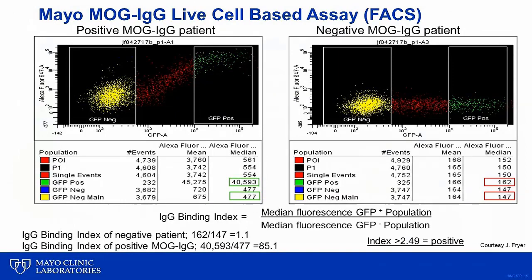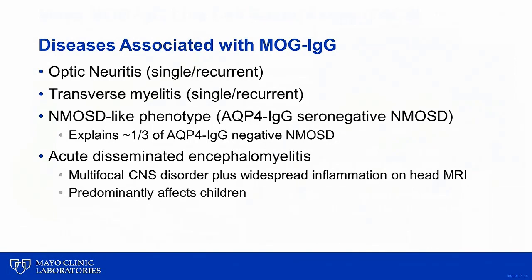If a patient is positive, the sample undergoes serial dilutions to determine the titer. Patients with MOG autoimmunity present with a diverse phenotype, which includes optic neuritis, transverse myelitis, acute demyelinating encephalomyelitis, and brainstem encephalitis. A subset of MOG-positive patients meet the current NMOSD criteria. In fact, MOG antibodies are positive in approximately a third of patients with aquaporin-4 seronegative NMOSD. However, despite some overlap in clinical features, MOG-associated disorder is a different entity than aquaporin-4 NMOSD and multiple sclerosis.